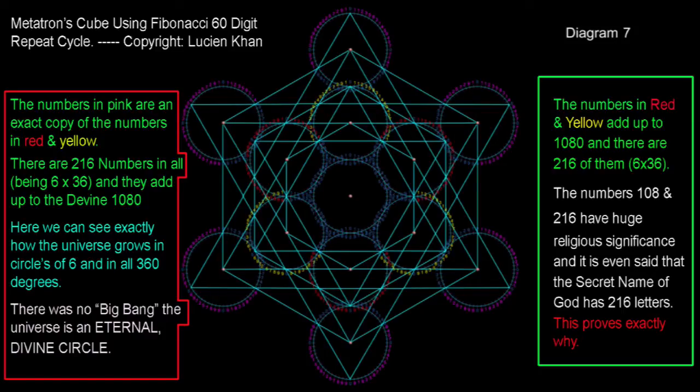The numbers in pink add up to the divine 1080 and there are 216 numbers in the sequence. That's 6 times 36. The numbers in red and yellow also add up to 1080 and there are 216 of them.